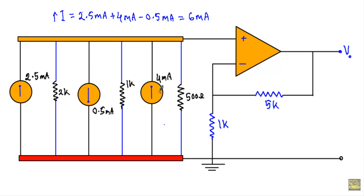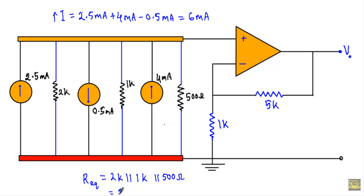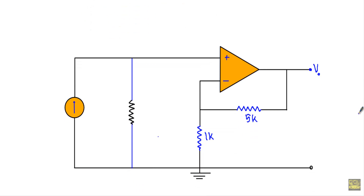We replace the three current sources with a single 6 mA current source. The 2 kΩ, 1 kΩ, and 500 Ω resistors are all in parallel between the non-inverting terminal and ground. Their equivalent parallel resistance equals 2 kΩ ∥ 1 kΩ ∥ 500 Ω = 286 Ω. So the simplified circuit has a 6 mA current source in parallel with 286 Ω.